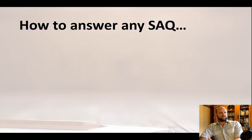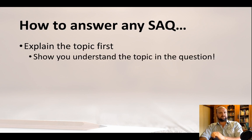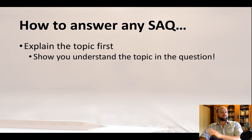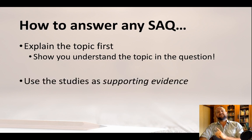Now, how can we answer any short answer question? I will make some later videos going into more detail, but basically here is my advice. After your introduction, explain the topic — show you understand the topic and the question. If it is about variables and behavior, explain how the variable affects the behavior. If it is about a research method, explain how and why it was used. If it is an ethical consideration, explain why it is relevant. Then get into the supporting evidence. Most students jump straight into the study, thinking IB psychology is all about studies.